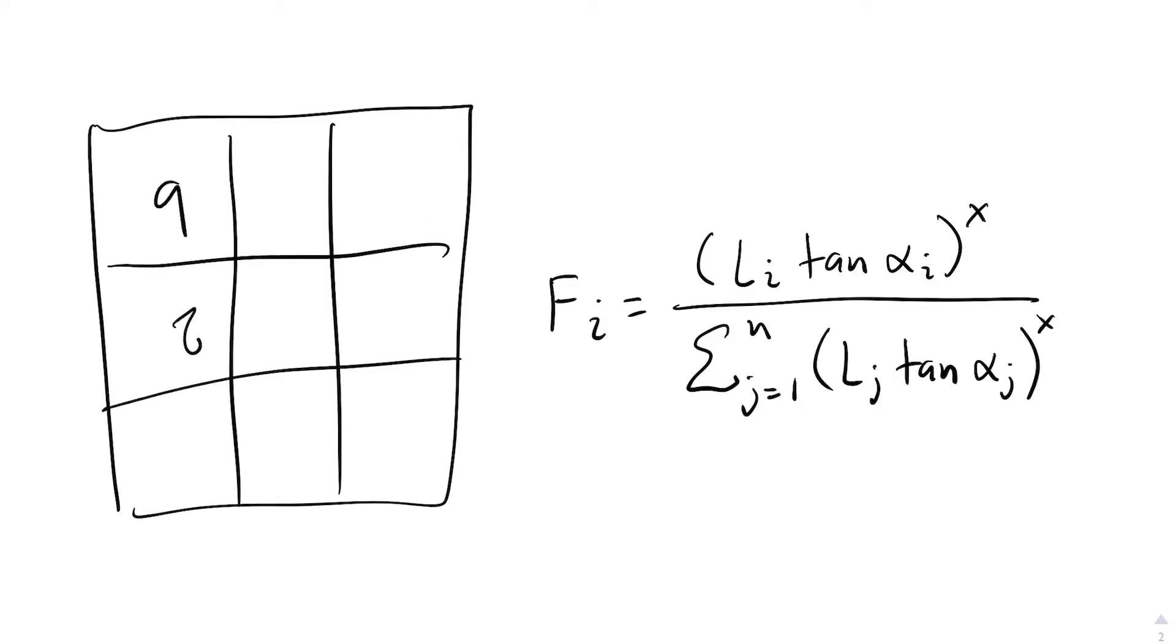So, going back to the previous example, the flows to the cell's neighbors with elevations of 7, 8 and 9 are all 0. Then, to compute the flow to the neighbors with an elevation of 6, we only have to look at the top part of the equation, and then we can normalize all the values at the end.